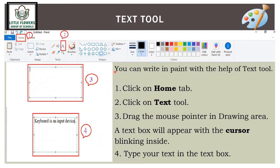To write text on your work area, select the text tool from the Home tab. Drag the mouse pointer on the area and a text box will appear with a blinking cursor. Then type your text in the text box.